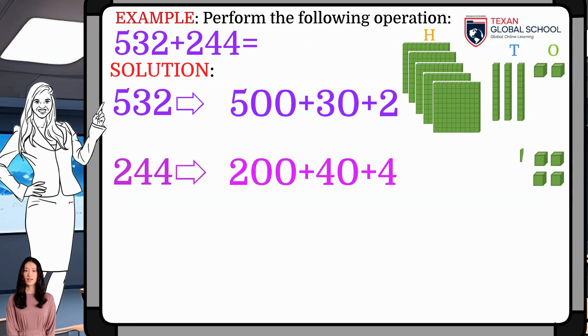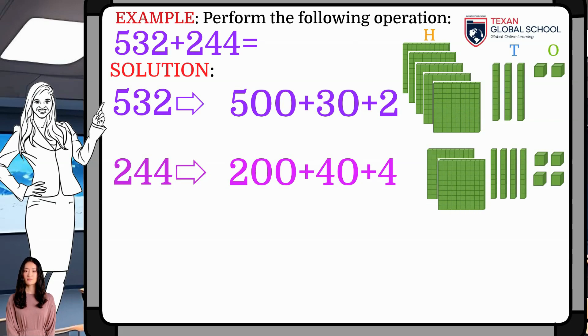244 has 4 1s, 4 10s, and 2 100s. Use the bars in each case to see the model. Then, draw a line below to make the addition.